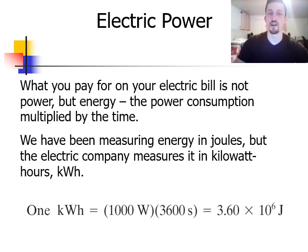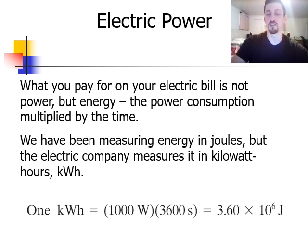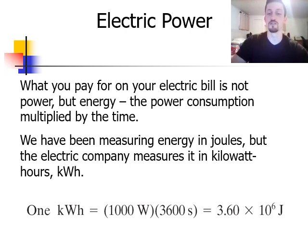When you pay your electric bill, you're not paying for the power you're getting — you're paying for the energy that you use. And that's going to be the power consumption multiplied by the time. We're probably used to measuring energy in units of joules, but when you pay your electric bill, the electric company measures it in kilowatt-hours. A kilowatt is 1,000 watts — that's a unit of power — and hours is a unit of time. So kilowatt-hour, which is power times time, is a unit of energy. To convert to joules, one kilowatt-hour is equal to 1,000 watts times 3,600 seconds, which is 3.6 times 10 to the sixth joules.